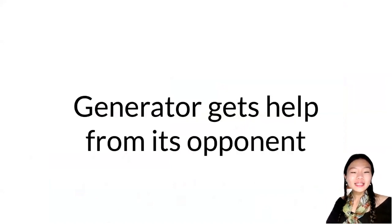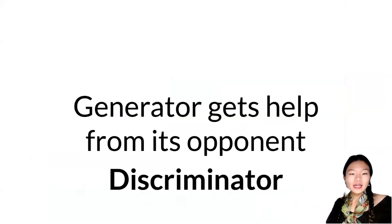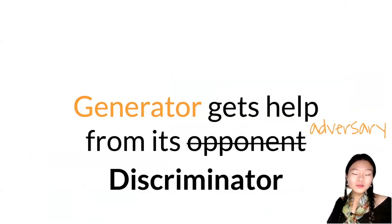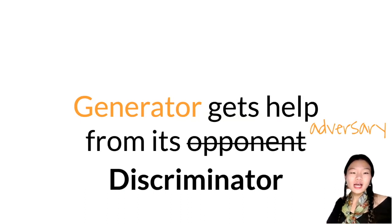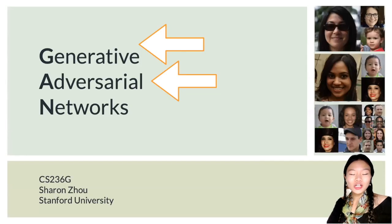But the generator gets some help — it gets help from its opponent, actually. And this is where the discriminator comes in, or perhaps you can call it an adversary. And so this is where the word 'generative' and 'adversarial' come from in Generative Adversarial Networks.